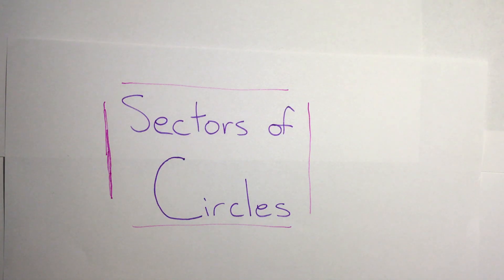In the previous video we looked at how to find the area of a circle and the circumference or the distance around a circle. In this video we're going to be looking at how to find the area of partial circles and also how to find what's called the arc length or the distance around part of a circle.